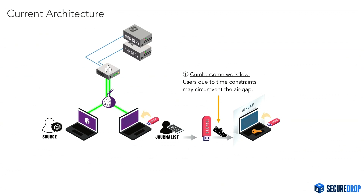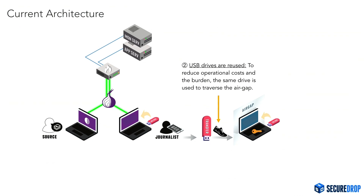They'll take the private key and put it on a networked device. It's rare, but something we have seen, and it's understandable — if you have a large quantity of traffic coming in through SecureDrop and it's your responsibility to check it that day, and you have to go through the air gap process every time you want to read something new, it's a lot of time. Another issue is the air gap is not really a true air gap — the USB drives are reused for convenience, since burning CDs to bring documents into the air gap is a significant burden.